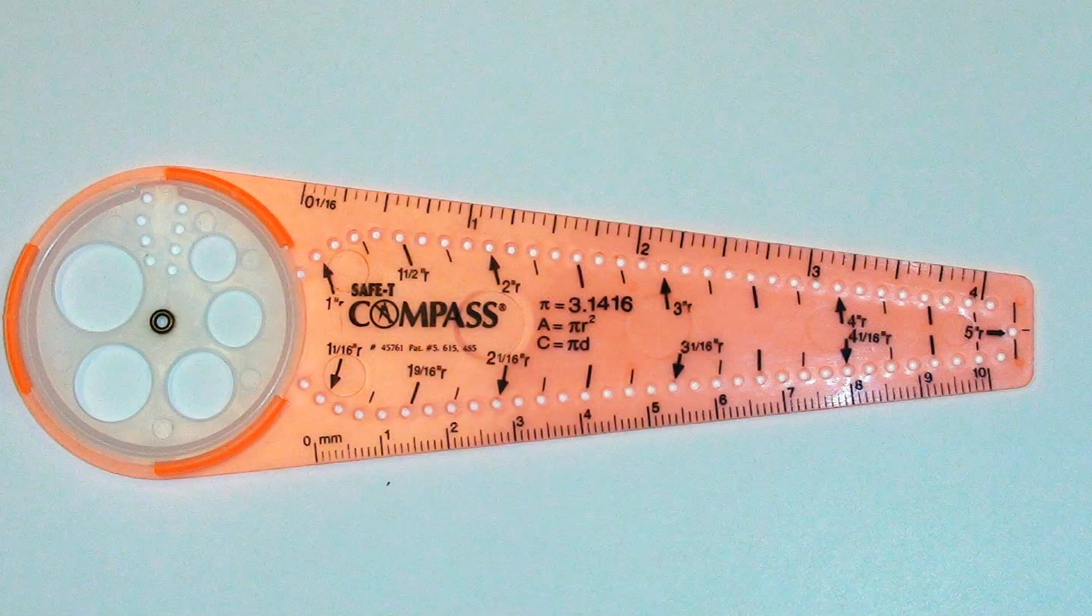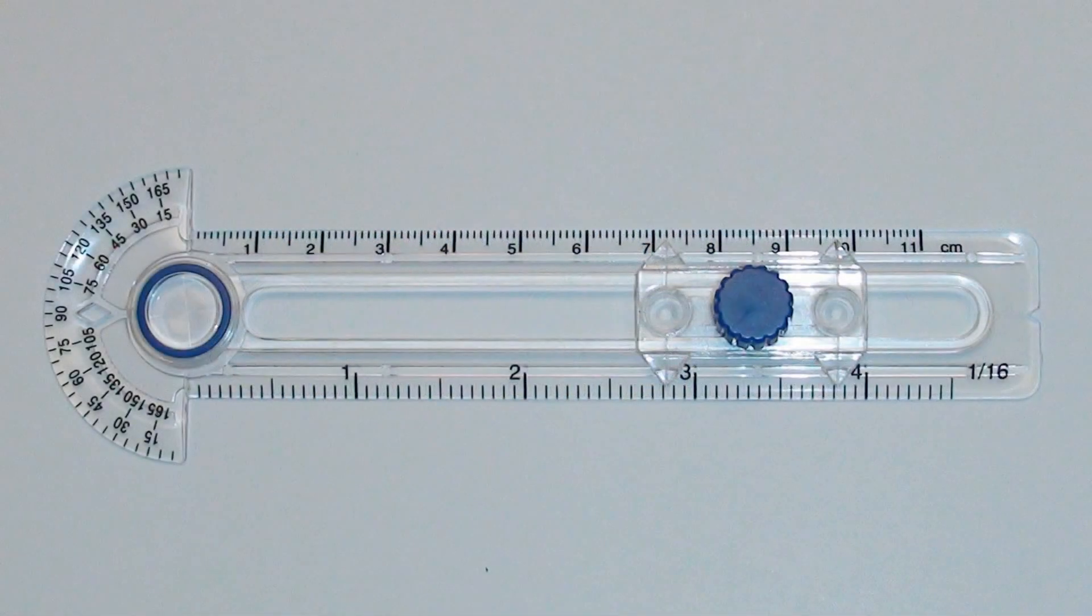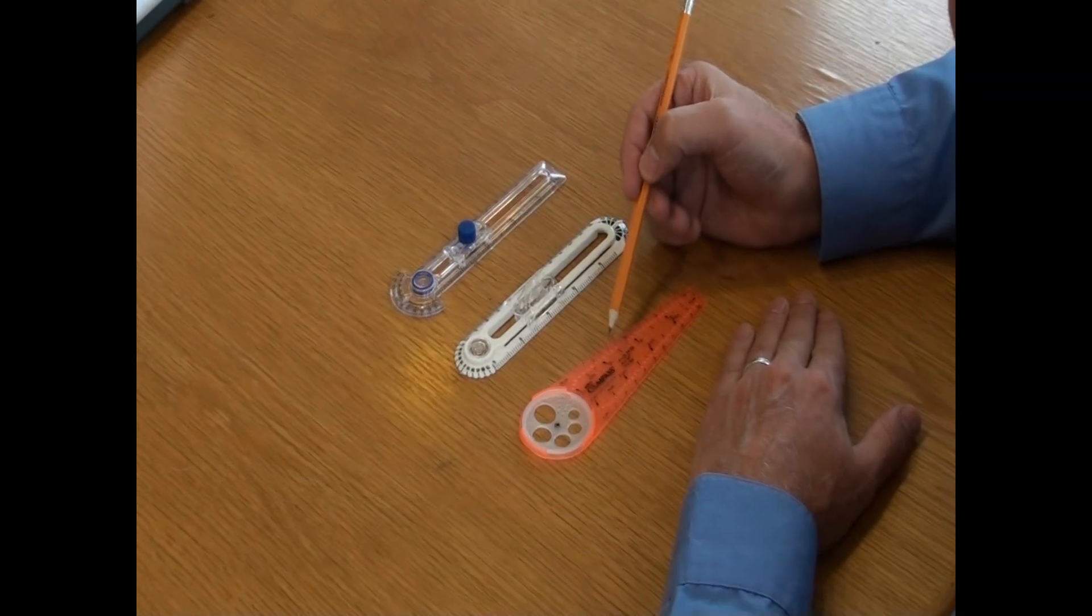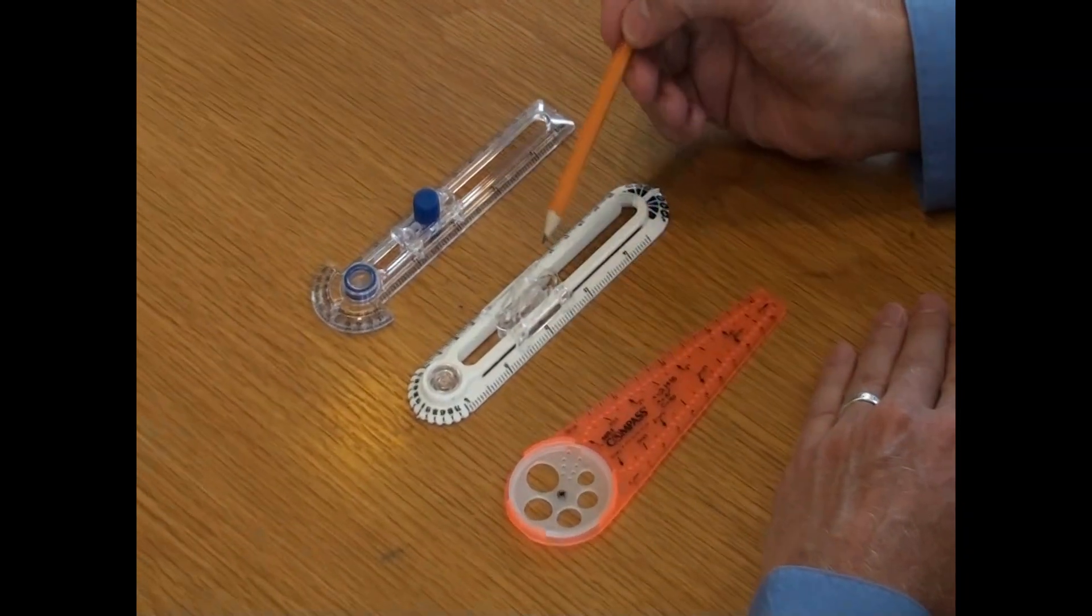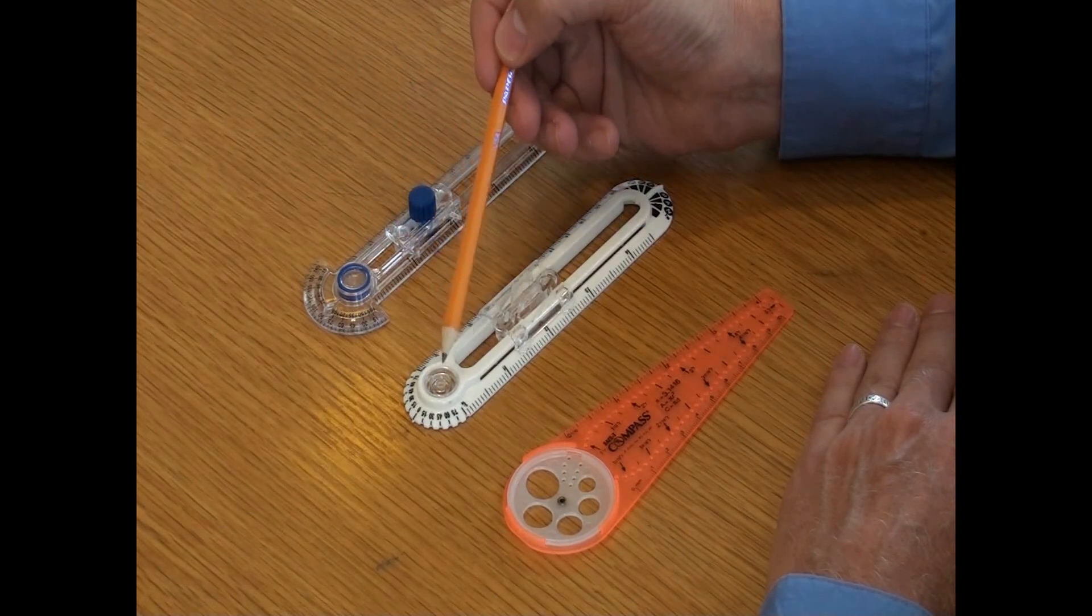As you can see, there is a wide variety of ruler-based safety compasses, but their structures are basically the same. Each version here has small holes to insert the tip of a writing utensil at various points along a ruler and a pivot wheel at one end.